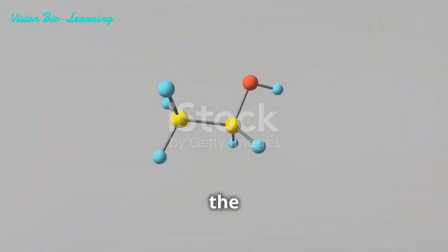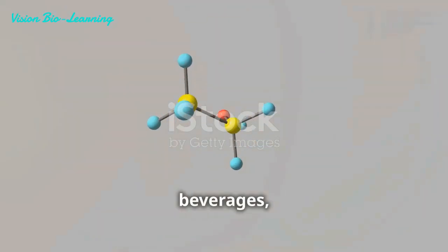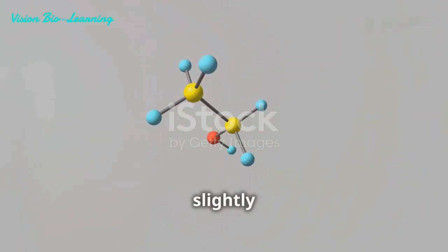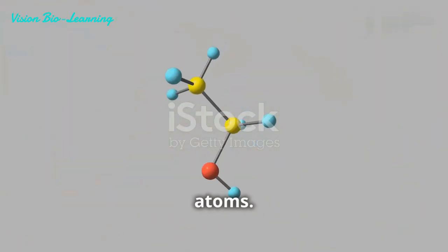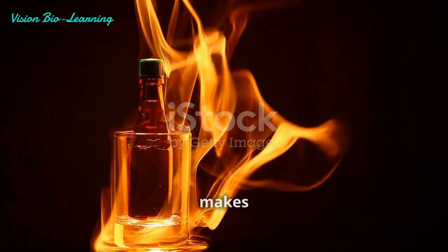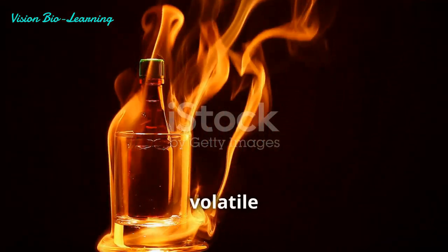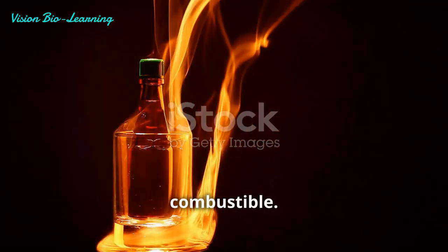Ethanol, the alcohol we often encounter in beverages, boasts a slightly longer carbon chain with two carbon atoms. This additional carbon atom makes ethanol less volatile than methanol, but still readily combustible.